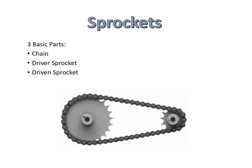You'll see a lot of similarities with gears on these. They have teeth, the diameter, and all of the equations are the same. The only difference is basically we've added a chain to go in between. Sometimes gears can slip and gum up together, so a lot of times with longer distances it's better to have a sprocket with a chain on it.